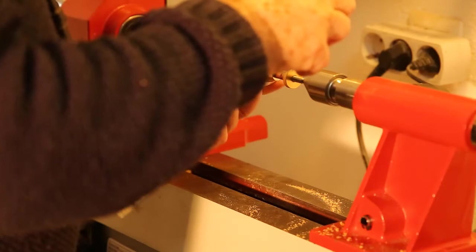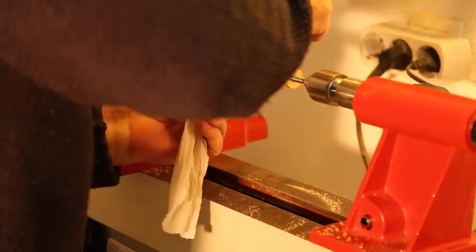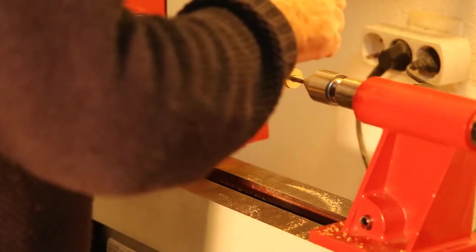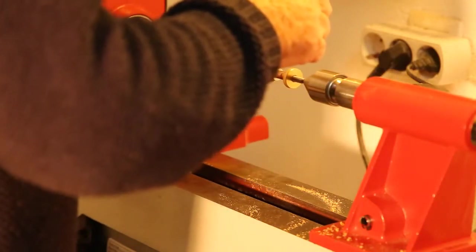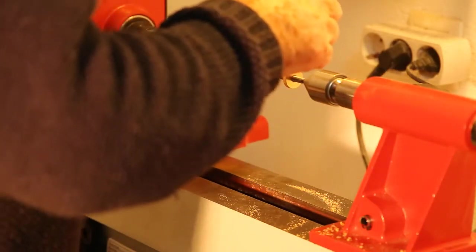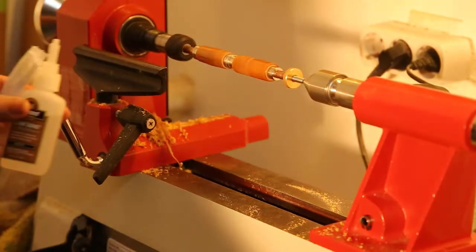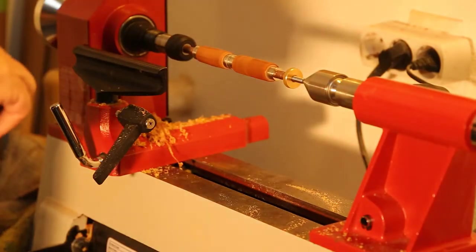So you take this paper towel and you put some super glue on. Not much. And wipe it across the blank. Put some on this one and wipe it across the blank.